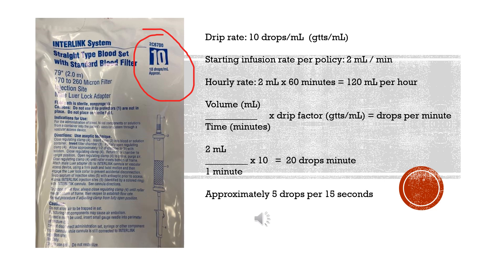In order to calculate how many drops per minute you're going to count, you're going to set up your math by your volume in mls divided by your time in minutes times your drip factor. And that's going to equal your drops per minute.